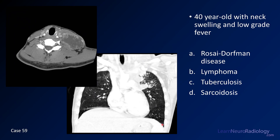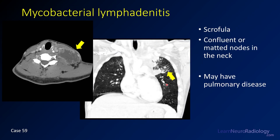Case number 59 is a 40-year-old with neck swelling and low-grade fever. Images include an axial neck image and a coronal image through the lungs. Choices are Rosai-Dorfman disease, lymphoma, tuberculosis, or sarcoidosis. This is tuberculosis of the neck, or scrofula. There is a fluid collection with peripheral enhancement and necrosis, sometimes draining to the skin. The lung images show tree-in-bud nodules in the left upper lung — simultaneous pulmonary disease. Necrotic lymphadenopathy in the neck with associated lung disease should prompt consideration of tuberculosis lymphadenitis.